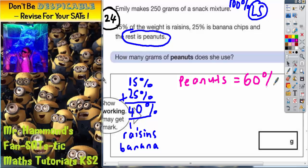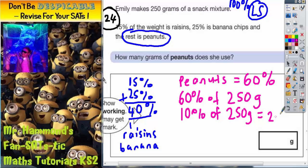So what we need to do is work out 60% of 250 grams, and the easiest way to do that is to break it down. So 10% first. Remember, 10% of anything, you're dividing it by 10. So 10% of 250 grams, divide that by 10, that's nice and easy: 25 grams. So 10% is 25 grams.